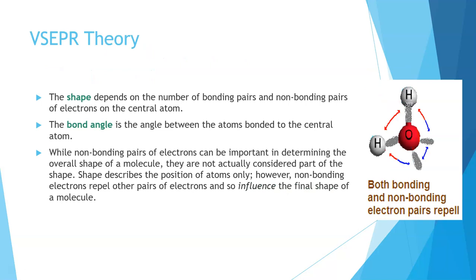The shape depends on the number of bonding pairs and non-bonding pairs. Bonding pairs shared between two atoms will have a different electron density than non-bonding pairs that are not distributed between two nuclei. The bond angle is defined as the angle between the atoms bonded to the central atom.